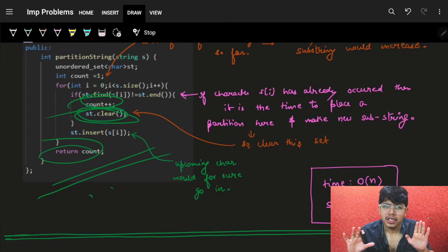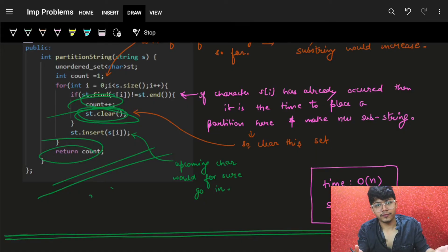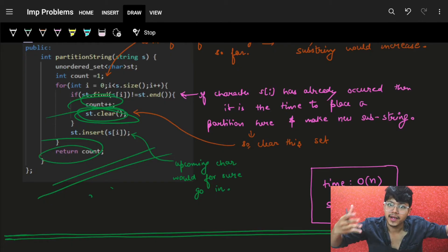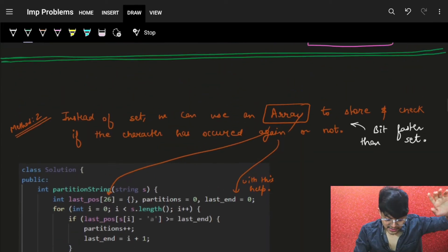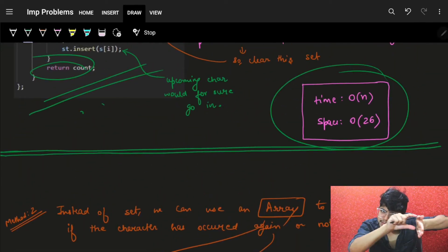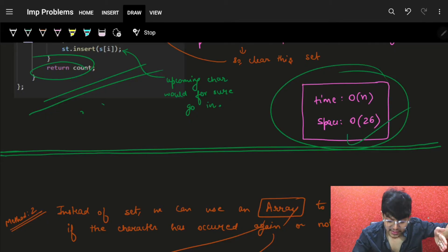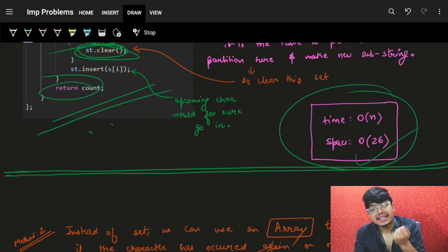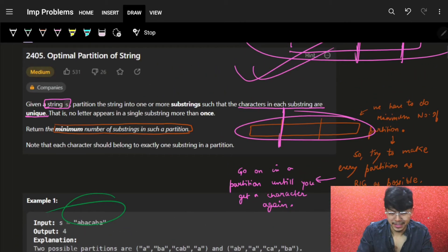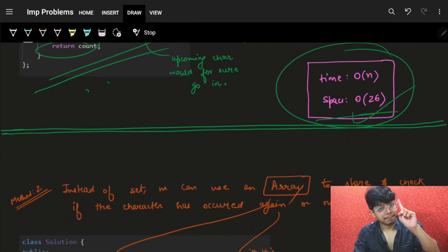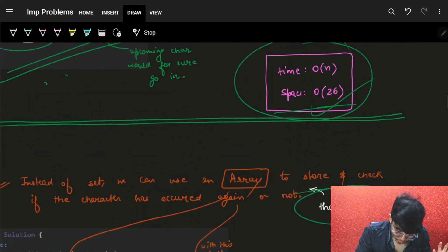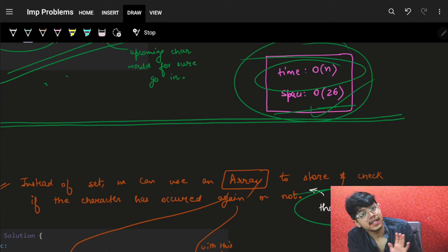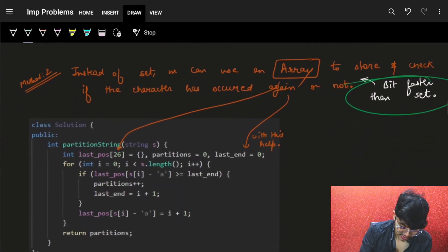This is a greedy approach — from the start, we try to maximize the first substring, then after placing a partition, maximize the next one. Time complexity is O(N) since we iterate once over the string. Space is O(26) because the unordered set can store at most 26 characters from the English alphabet. However, an array is always faster than an unordered set in practice, although both are technically O(N) and O(26).